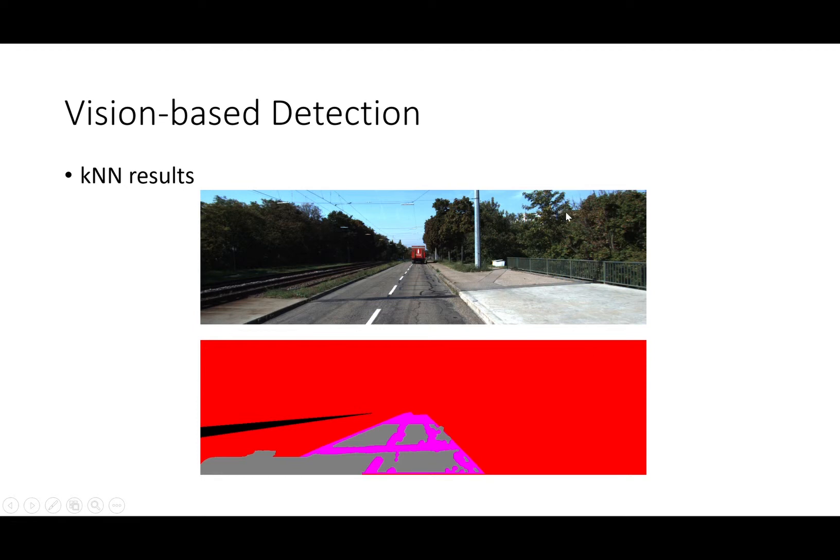Here is an example of the KNN results. As you can see, we have very large artifacts. We are missing a lot of road regions and the overall boundary is not very smooth.